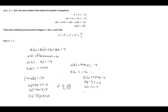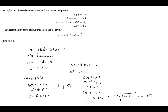Since abc equals negative 6, we substitute: (3c minus 4) times c equals negative 6, giving 3c squared minus 4c plus 6 equals 0. Using the quadratic formula, we get c equals (4 plus or minus the square root of 16 minus 72) over 6.